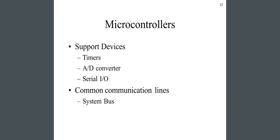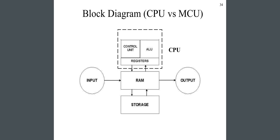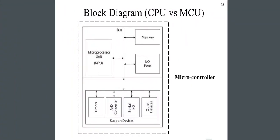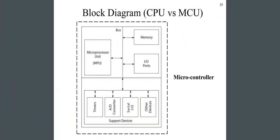Support devices include timers, ADC converters, serial input/output, and the common communication line is the system bus. There is a block diagram of CPU versus MCU showing the input and output, as well as RAM, storage, and registers, where the control unit and ALU (Arithmetic Logic Unit) are situated. In the microcontroller block diagram, the microprocessor unit (MPU) is connected via a bus topology to memory, input/output ports, and support devices like timers, ADC converters, and serial input/output.